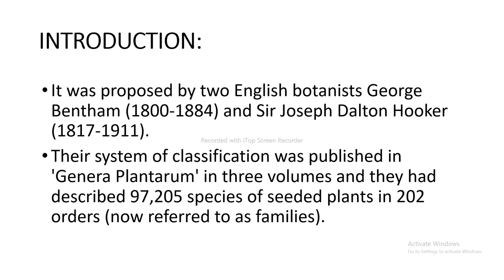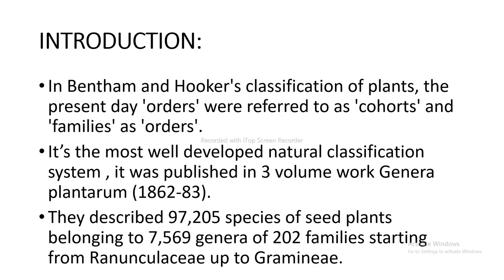It is also used in a number of herbaria and botanical gardens all over the world. It is a well-known and widely accepted classification of seeded plants. It was proposed by two English botanists: George Bentham (1800–1884) and Sir Joseph Dalton Hooker (1817–1911). Their system of classification was published in Genera Plantarum in three volumes. They described about 97,205 species of seeded plants in 202 orders, now referred to as families, belonging to 7,569 genera, starting from Ranunculaceae up to Gramineae.